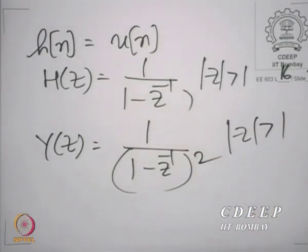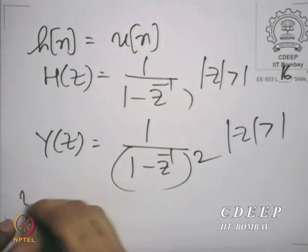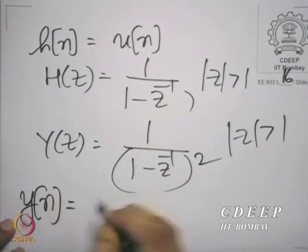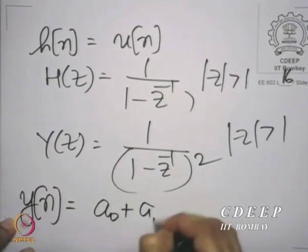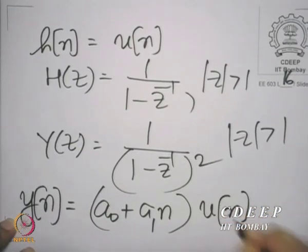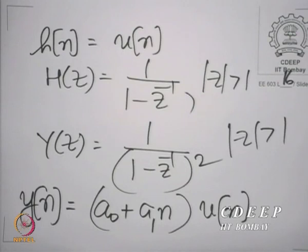And we know the form of y[n]. y[n] would be of the form (a₀ + a₁·n)·u[n]. Now, it is very interesting. Here is a system where the input has a pole co-located with the impulse response — it is the same place.